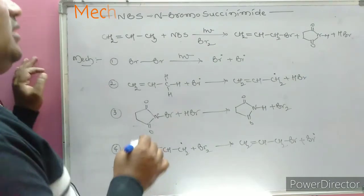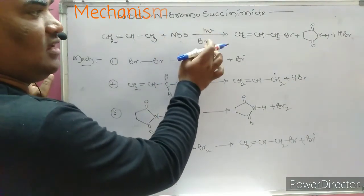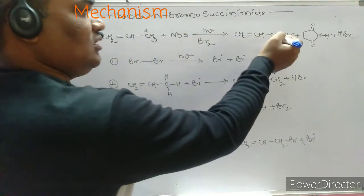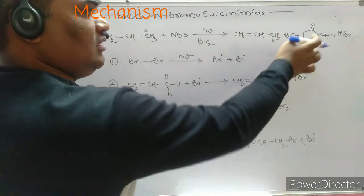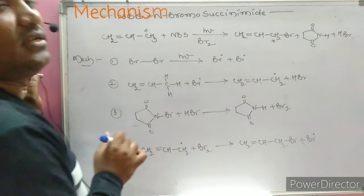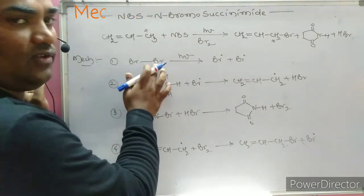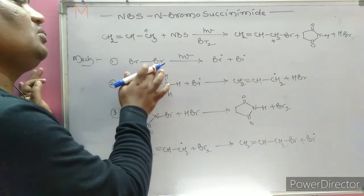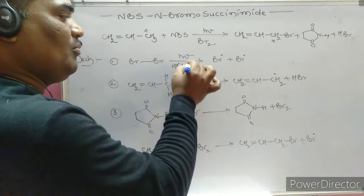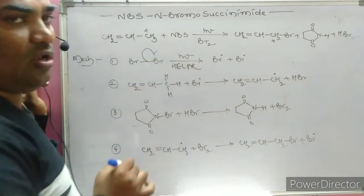Example: propene reacts with NBS in the presence of sunlight. Bromination occurs at the allylic position, giving allylic bromination. The byproducts are succinamide and HBr. Regarding the mechanism: Br2 has zero electronegativity difference between the bonded atoms. In the presence of sunlight (a HELPER condition), the bond breaks homolytically — this is called homolysis.